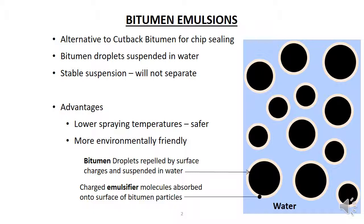A bitumen emulsion typically has 60-75% bitumen, with the rest of the mix being water and a small amount of emulsifier. Emulsions with a low bitumen content have a viscosity close to water, with the viscosity increasing as the binder content increases. Above 75% binder, the emulsion becomes paste-like and cannot be effectively spread.